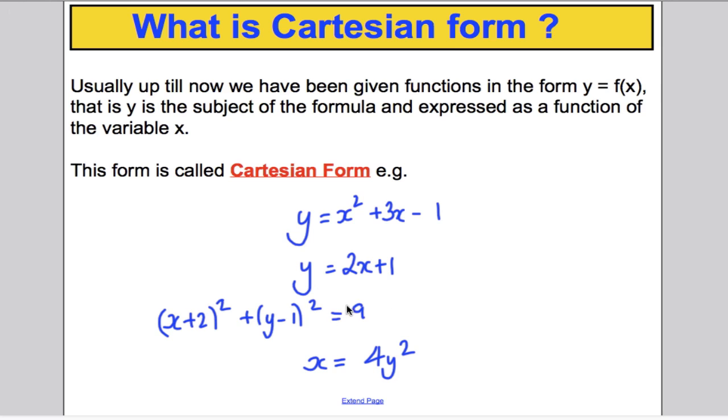I know x is the subject of this formula but we could easily rearrange this for y to be the subject of that formula. And similarly here we could make y the subject if we wanted to. So Cartesian usually looks like that, doesn't have to, but the key thing is that we have to have only x's, y's in the equation and numbers. Nothing else. That's Cartesian form.